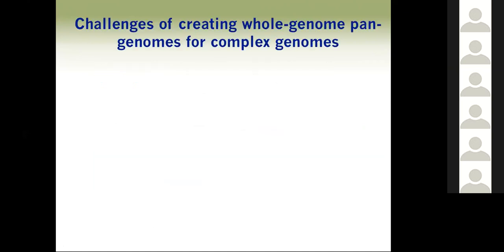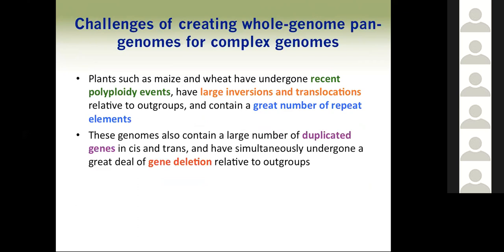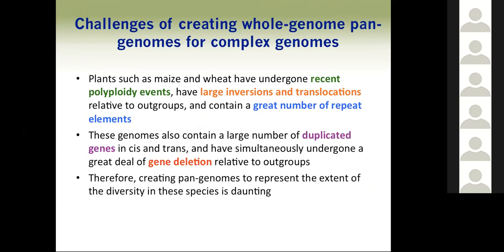There are challenges in creating whole genome pan genomes for complex genomes such as maize and wheat. These species have undergone recent polyploidy events, have large inversions and translocations relative to their outgroups, contain a great number of repeat elements, have large numbers of duplicated genes in cis and trans, and have simultaneously undergone a great deal of gene deletion relative to outgroups. Therefore, creating pan genomes to represent the extent of diversity in these species is very daunting.